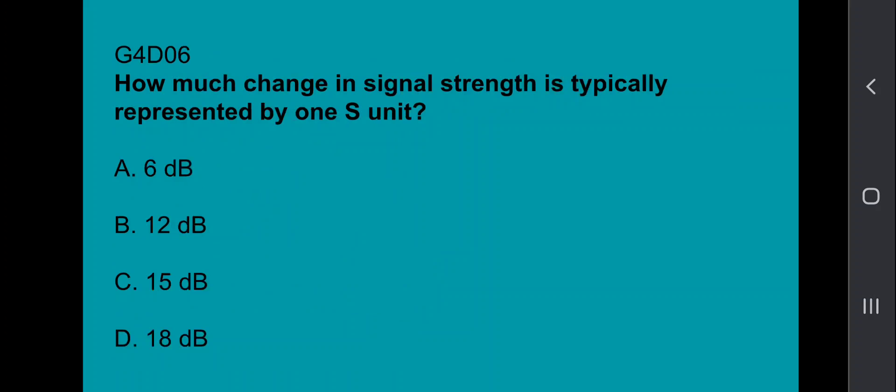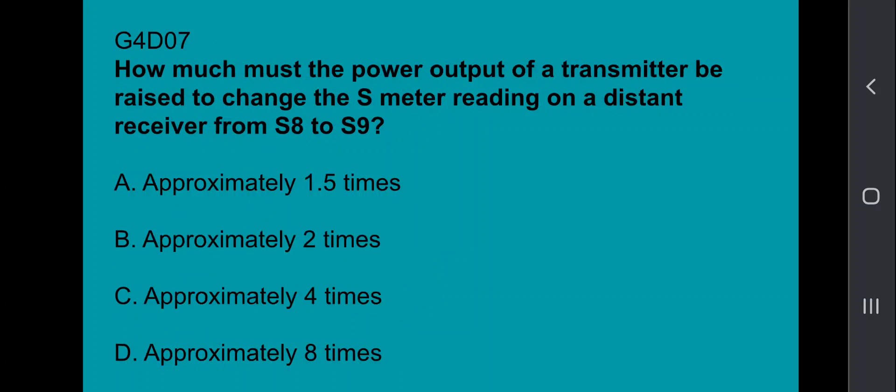G4D06, how much change in signal strength is typically represented by one S unit? And that's 6 dB. G4D07, how much must the power output of a transmitter be raised to change the S meter reading of a distant receiver from S8 to S9? It's approximately 4 times.